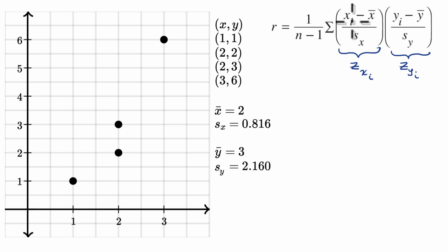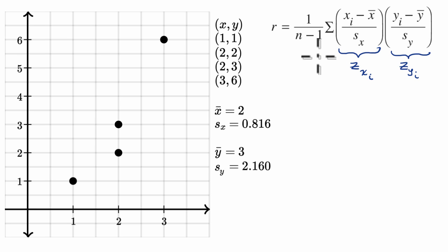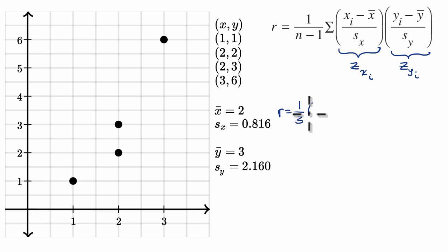That's the z-score for that x data point, and this is the z-score for the corresponding y data point — how many sample standard deviations is it away from the sample mean? In the real world, you won't have only four pairs and it's very hard to do by hand; we typically use software. But it's really valuable to do it by hand to get an intuitive understanding. So in this particular situation, r is going to be equal to one over n minus one — we have four pairs, so it's one over three — times a sum of the products of the z-scores.